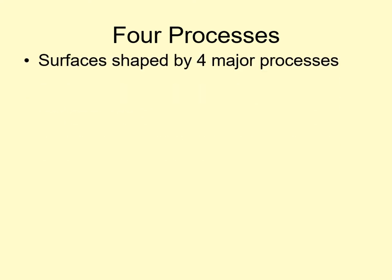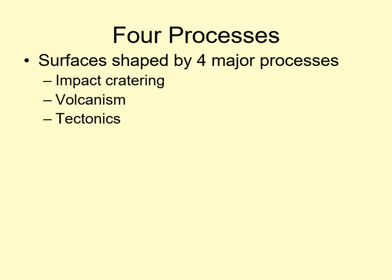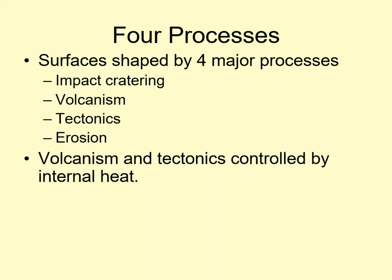There are four major processes that shape the surfaces of solid worlds: impact cratering, volcanism, tectonics, and erosion. We're going to look at each of these in detail, but we should start by understanding that both volcanism and tectonics are primarily controlled by the internal heat of the planet. If the interior is hot enough that convection is possible inside the planet, then there will be plenty of energy to power volcanism and tectonics.